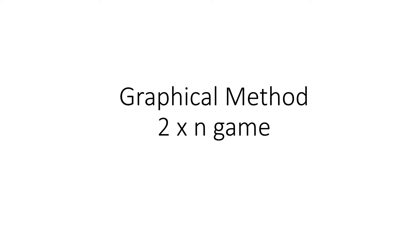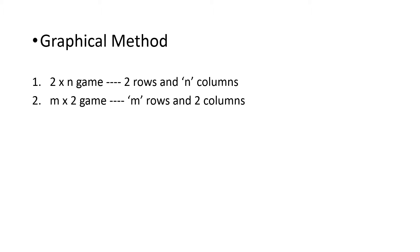Today, let us learn the graphical method solution of a 2×n game in game theory. There are two types of graphical method solutions. First is for a 2×n game, that is 2 rows and n columns. If a problem has 2 rows and n columns, we go for graphical solution. And if it is an m×2 game, we also go for graphical solution. The method is the same but only the final point is different.